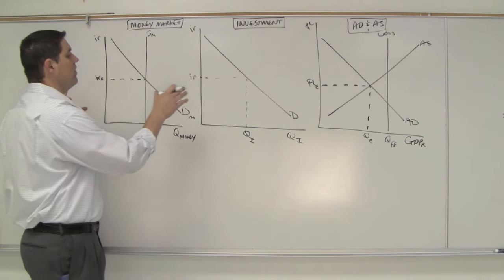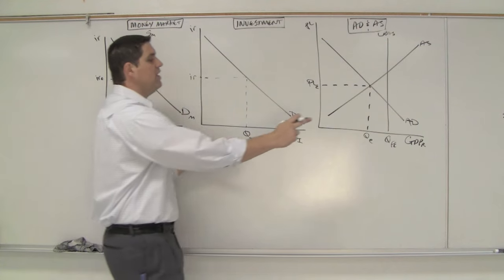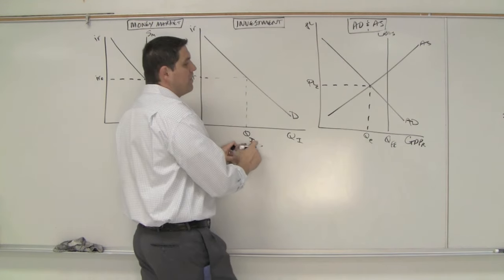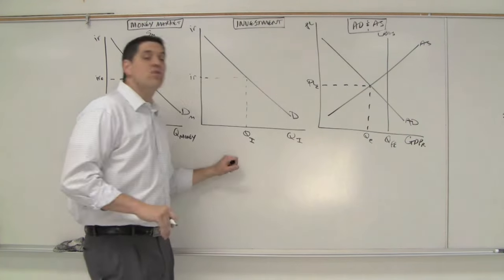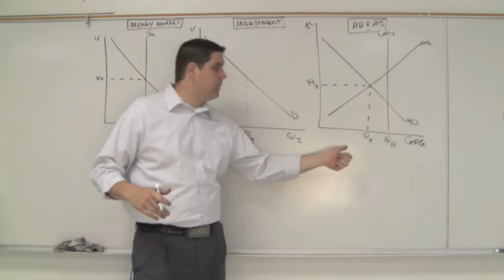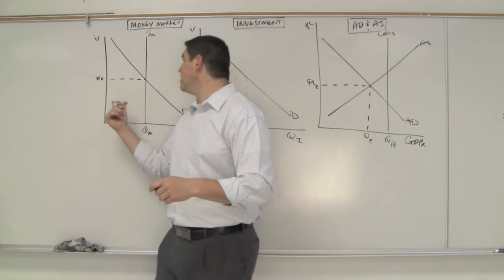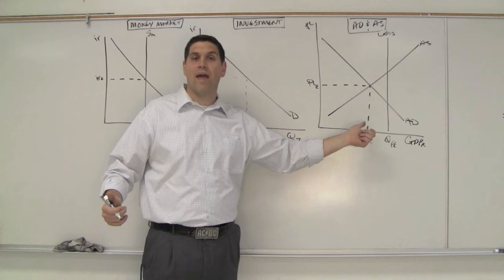Now, the connection between these two graphs is the interest rate. The connection between these two graphs is that investment is a component of aggregate demand. The question now is, if we have a gap, what do we do to this graph? How does it affect that graph, and how is it going to close the gap?